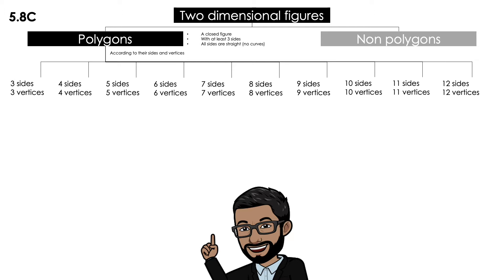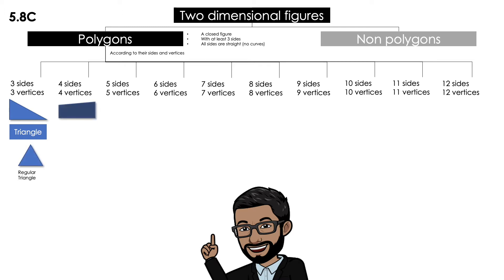If it has three sides and three vertices, it's a triangle. If all the sides are congruent, it's a regular triangle. If it has four sides and four vertices, it's a quadrilateral. If all of the sides are congruent, it's a regular quadrilateral.